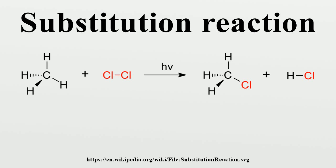Substituted compounds are chemical compounds where one or more hydrogen atoms of a core structure have been replaced with a functional group — such as alcohol, hydroxy, or halogen — or with larger substituent groups. For example, benzene is a simple aromatic ring. Benzenes that have undergone substitution form a heterogeneous group of chemicals with a wide spectrum of uses and properties.